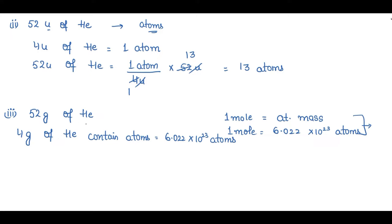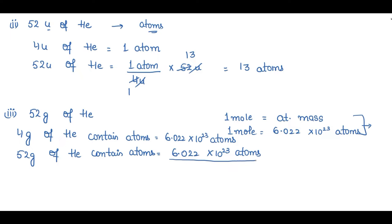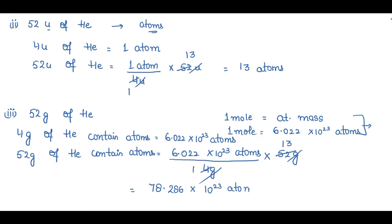Now for 52 grams of helium, applying the unitary method: atoms = (6.022 × 10²³ atoms / 4 grams) × 52 grams. The gram units cancel, giving 6.022 × 52 / 4 = 78.286. So 52 grams of helium contains 78.286 × 10²³ atoms.